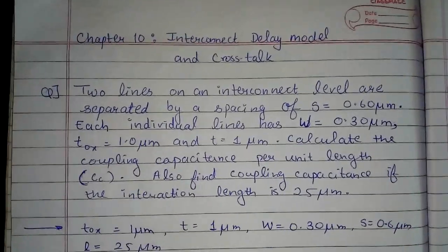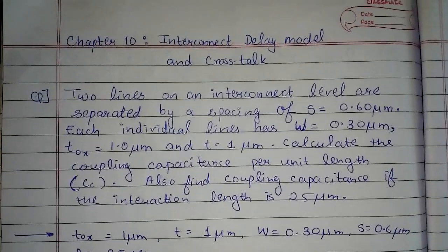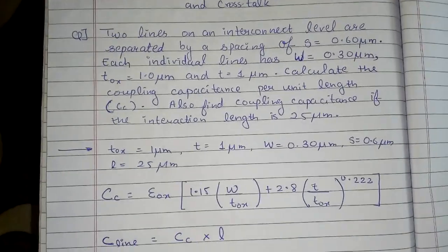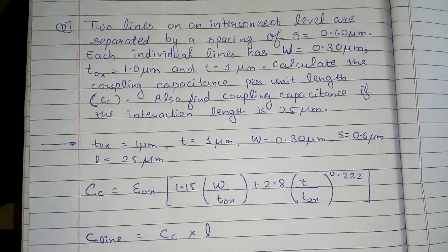Hello everyone, in this video we are going to see interconnect delay model and cross talk. So the question is something like this: there are two lines on an interconnect level and they are separated by a spacing